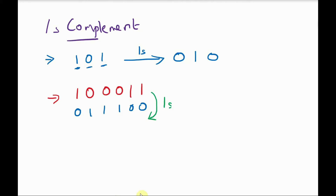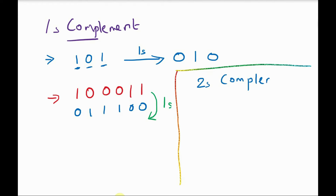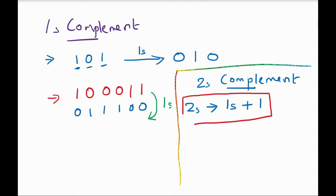So, whatever be the binary number, if we want to find the 1's complement, just replace 1 with 0 and 0 with 1. Now we will see the 2's complement. 2's complement is found by first taking the 1's complement of the number and then adding 1 to the result. First find the 1's complement of the number and then add 1 to the result.